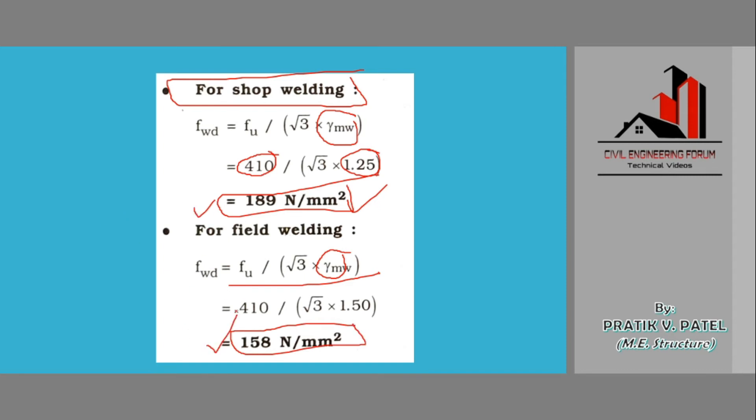So we'll have this value most commonly because the value of fu also will remain same as it is the ultimate stress of the weld, so it will not change. So we should remember this thing: for shop welding it should be 189 newton per mm square and for field welding the design strength of the weld would be 158 newton per mm square.